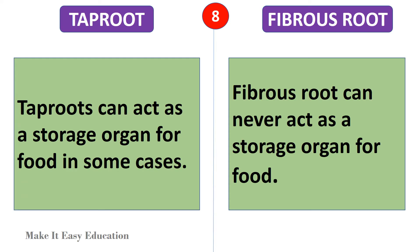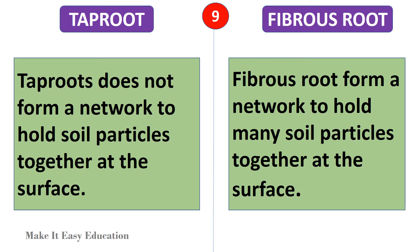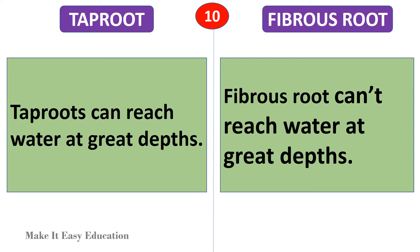Taproots can act as a storage organ for food in some cases. Fibrous root can never act as a storage organ for food. Taproot does not form a net to hold soil particles together at the surface. Fibrous root forms a network to hold many soil particles together at the surface.